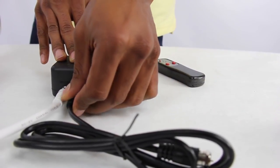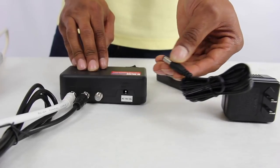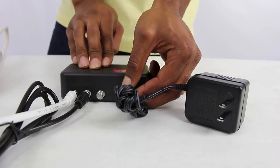Next, attach your black cable to the TV1 output jack. Then attach your power adapter to the power supply.